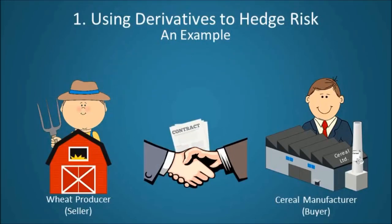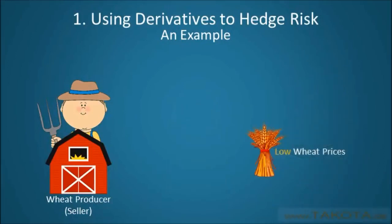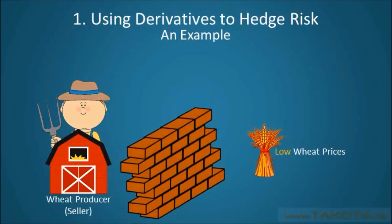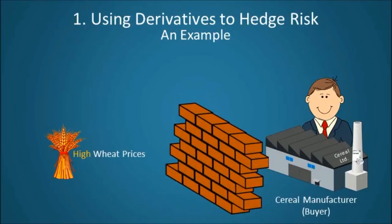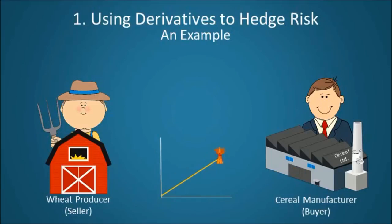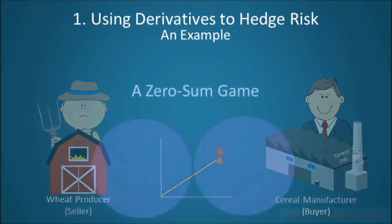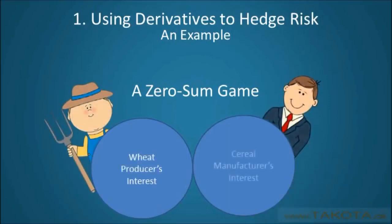For example, a wheat producer might agree to sell wheat to a manufacturer in six months at the current market price of $12, regardless of what the market price for wheat is in six months. By locking in the price of wheat, the producer is seeking to protect himself or herself against an expected decrease in the price of wheat. On the other hand, the manufacturer is seeking to protect himself or herself from an expected increase in the price of wheat. If the price of wheat falls, the cereal manufacturer or buyer will wish that they hadn't signed the contract, because they could be buying wheat for cheaper had they not signed it. Conversely, if the price of wheat rises, the producer or seller will wish that they hadn't signed the contract, because they could be selling wheat for more money had they not agreed to their contract's terms. Because the price of wheat can only move in two directions — up or down — this example is a zero-sum game, possessing both a distinct winner and a distinct loser.